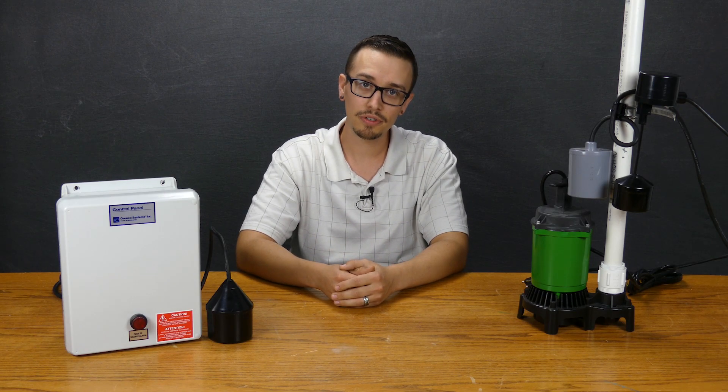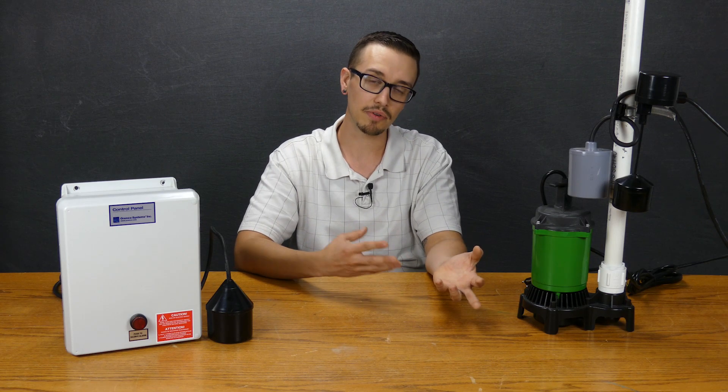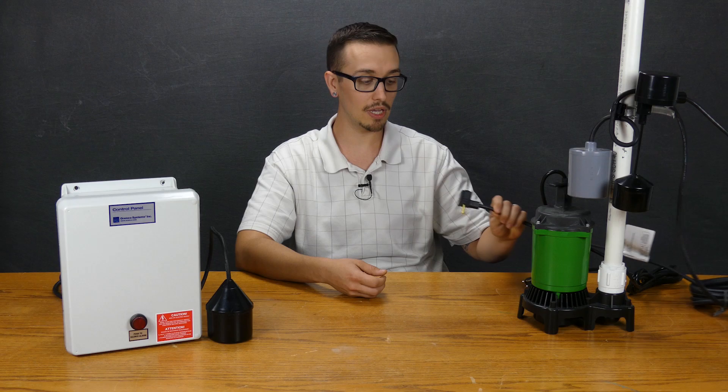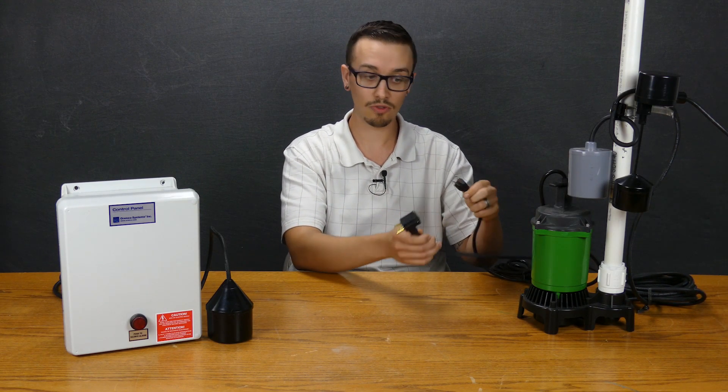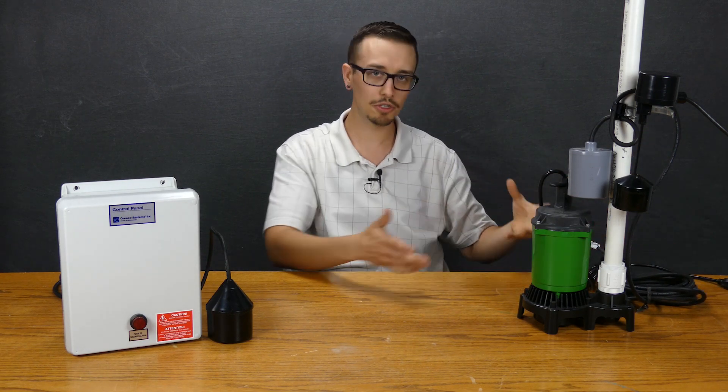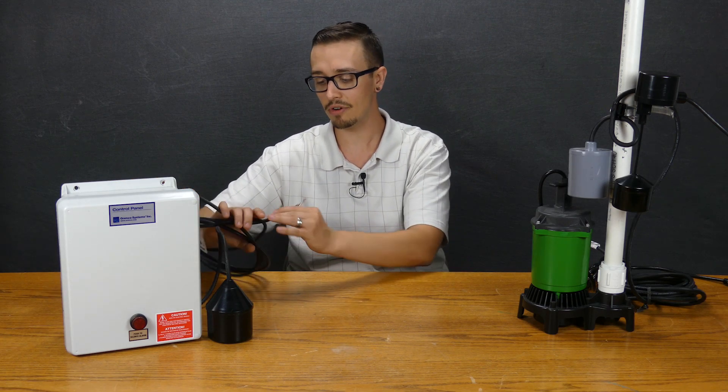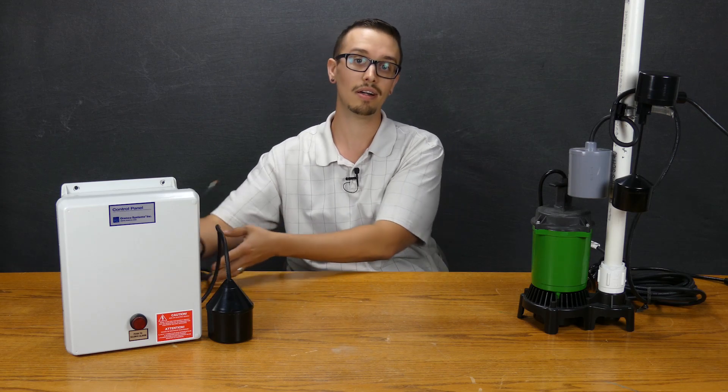One notable thing about pump switches is they are generally offered with a piggyback configuration or a no plug configuration. Of course we've all seen that piggyback before, that's the plug that then goes into a plug, this being the switch and this being the pump's power. It's real nice when you're doing some troubleshooting or anything like that. A control switch is only ever going to be offered with open wire like this because it's intended to be installed in a control panel.